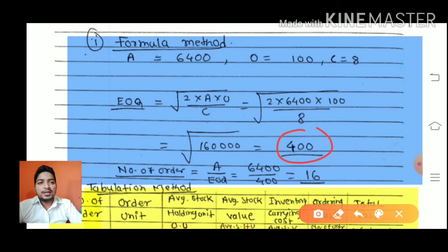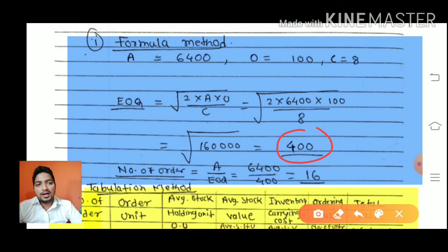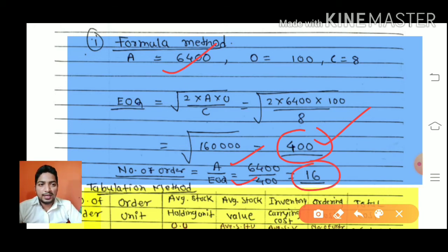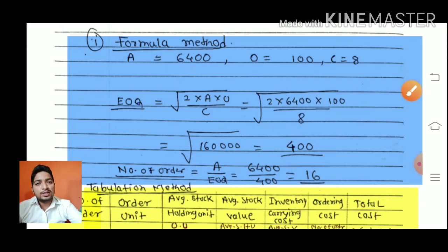Then we calculate the number of orders. The formula for number of orders is: Annual Consumption upon EOQ. Annual consumption is 6,400 and EOQ is 400, so 6,400 divided by 400 gives us 16. The number of orders is 16. That completes the formula method — EOQ and number of orders.